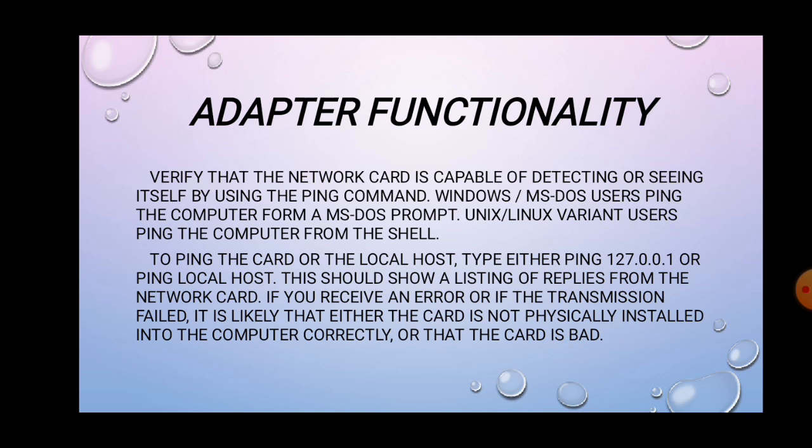Adapter functionality. Verify the network card is capable of detecting or seeing itself by using the ping command. Windows or MS-DOS users ping the computer from the MS-DOS prompt. Unix or Linux users ping the computer from the shell. To ping the card or the local host, type either ping 127.0.0.1 or ping localhost. You should see a listing of replies from the network card. If you receive an error or if the transmission failed, it is likely that the card is not physically installed correctly or that the card is bad.